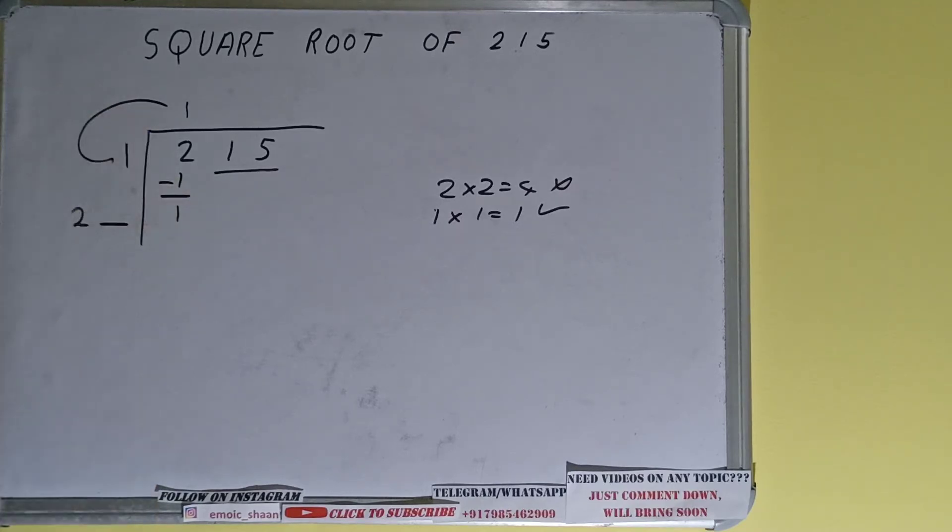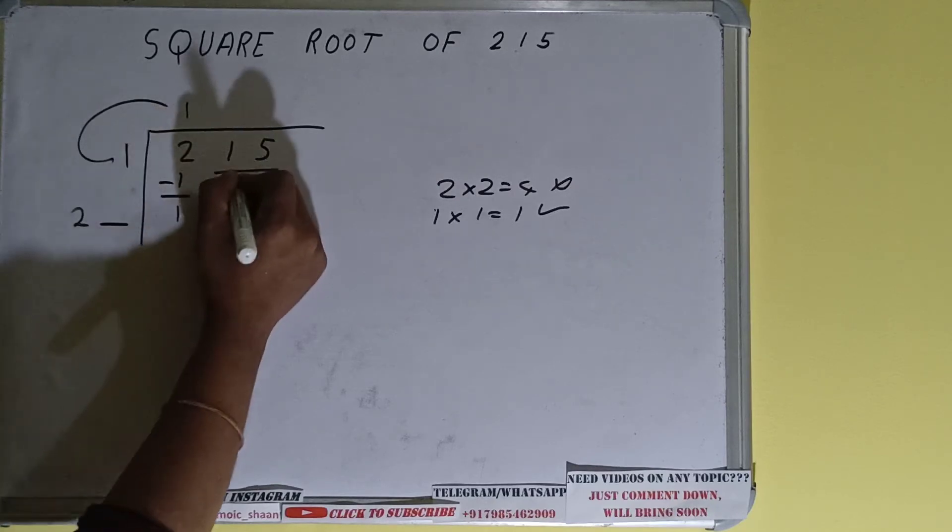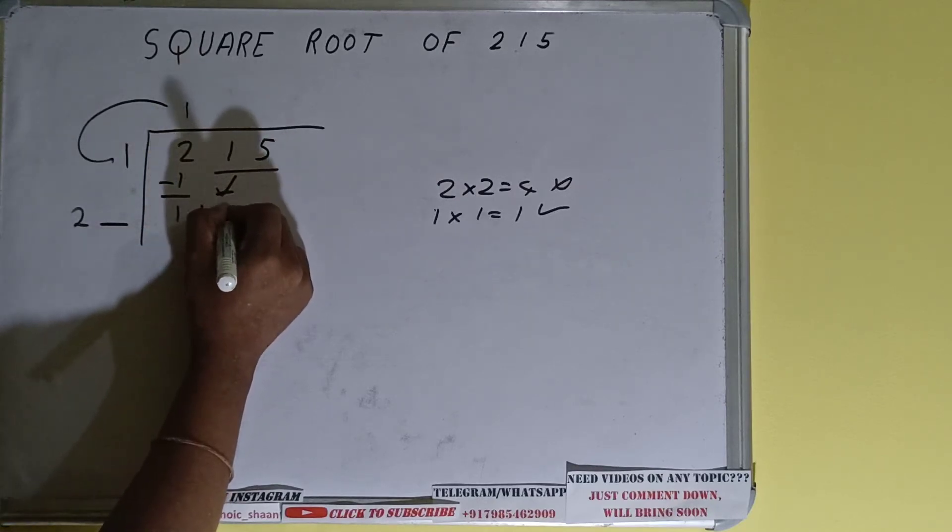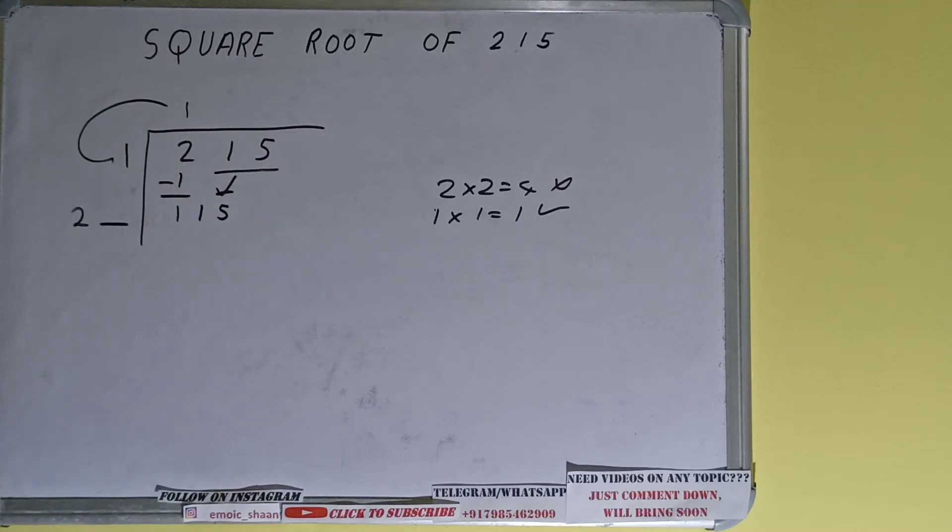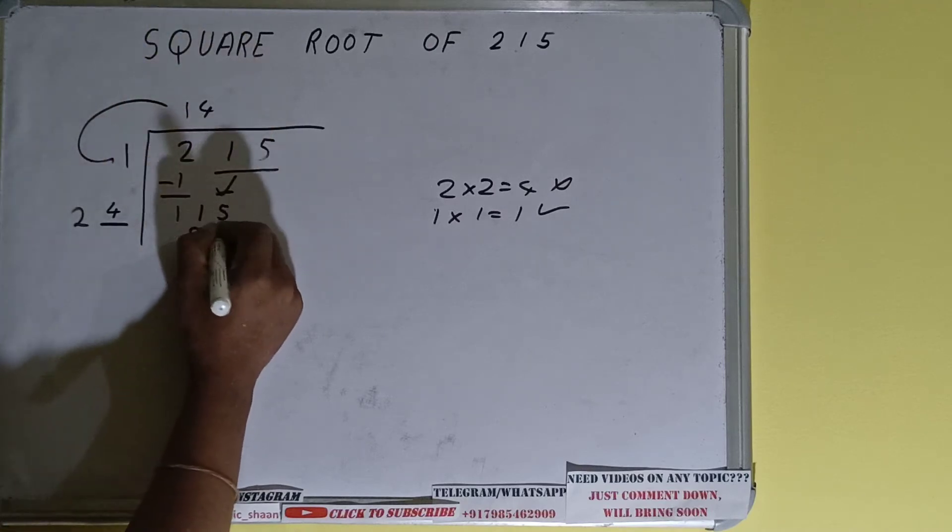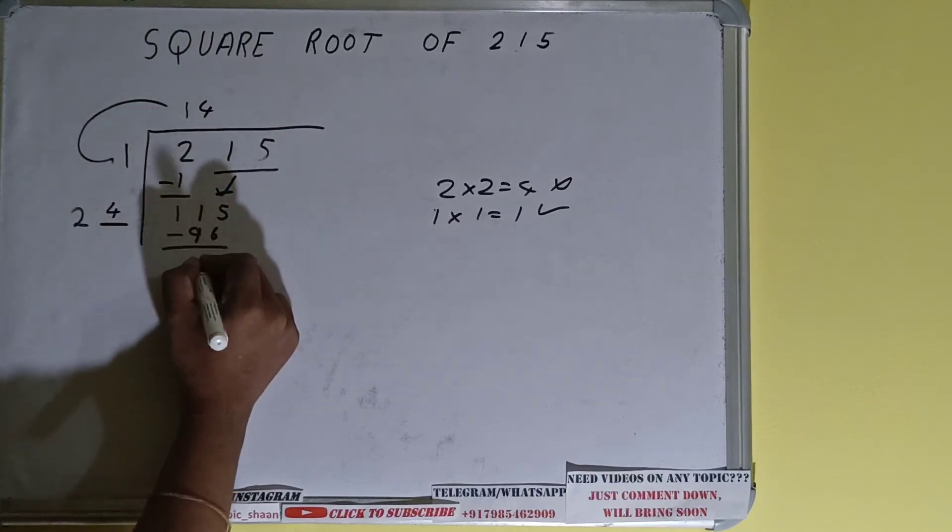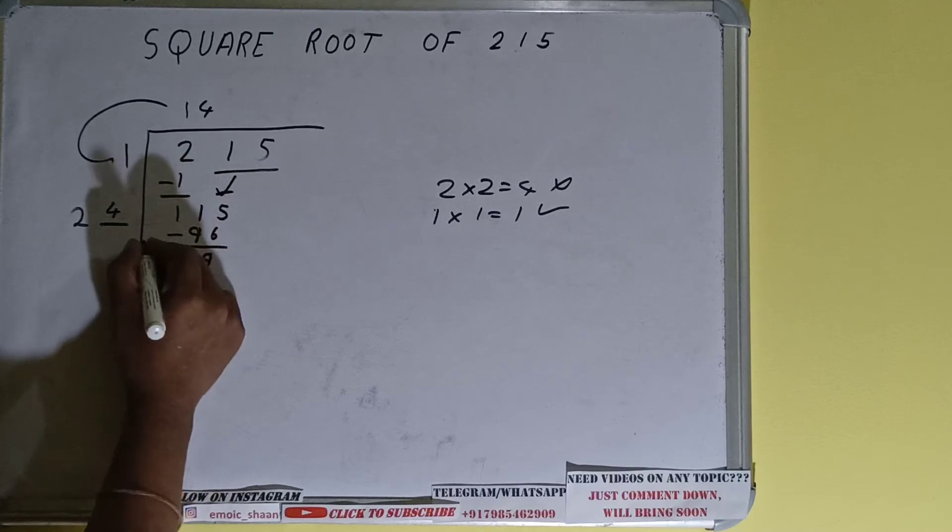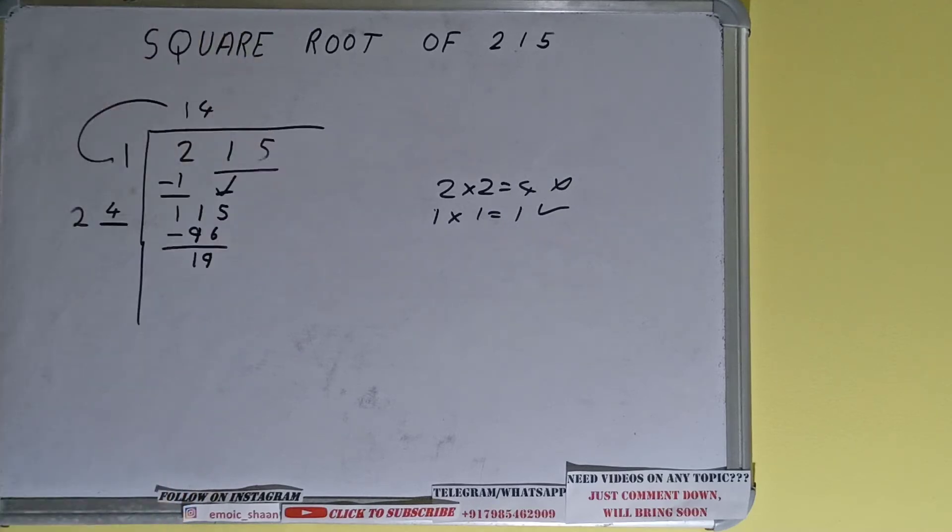We need to make this number big so that we can divide, so bring the next pair down and it will be 115. Now whatever number we write here we have to write here also. So if we write five here and five here we'll get 125 which is bigger than 115, so we have to use four. Four here and four here will give 96. Subtract it and we'll be having 19. Now 24×4 we did right, so add both. So 24+4 will be 28, write it over here and keep one digit extra over here.